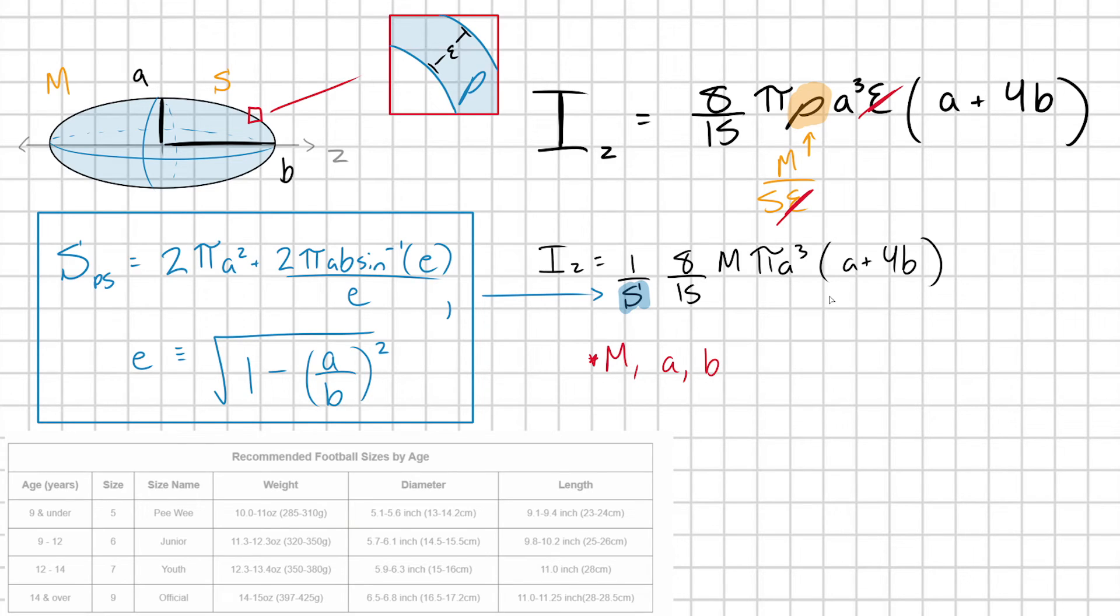I found a nice source, which I'll put the link to in the description, containing some nice values we can use to estimate our moment of inertia. I'm going to go in the middle on each of these values. I'm taking M to be approximately 410 grams, A to be about 8.4 centimeters, and B to be approximately 14.1 centimeters.